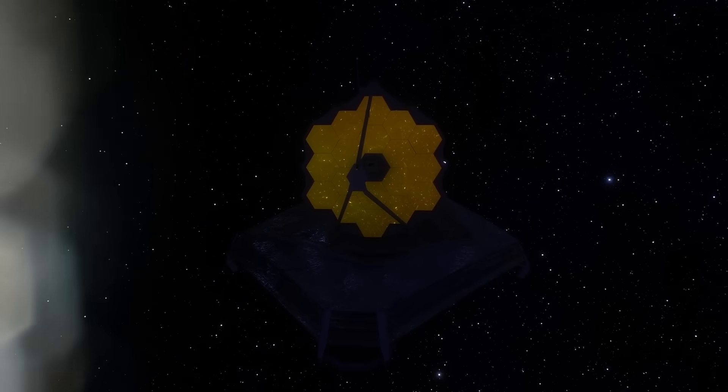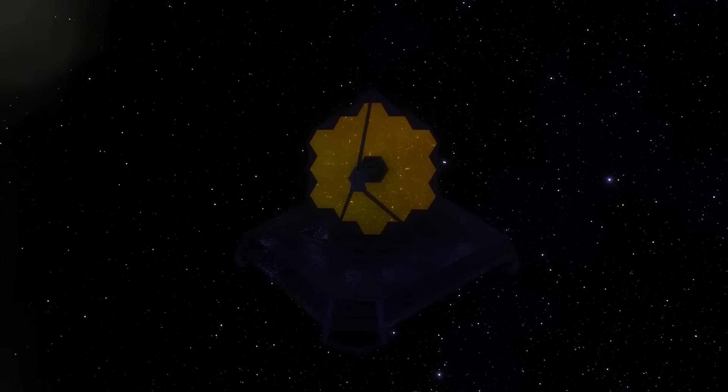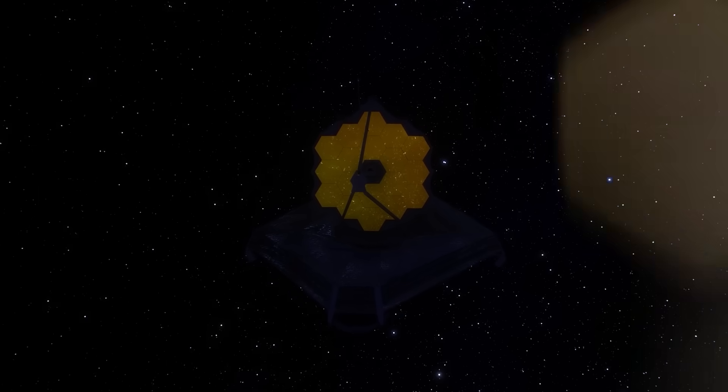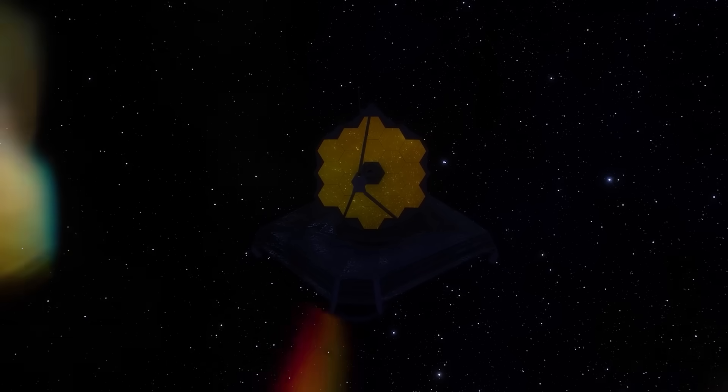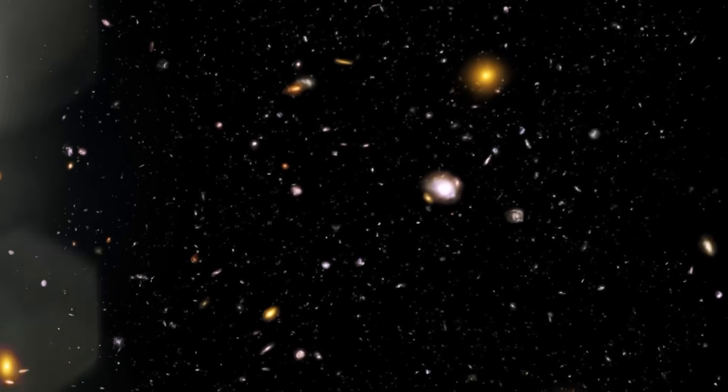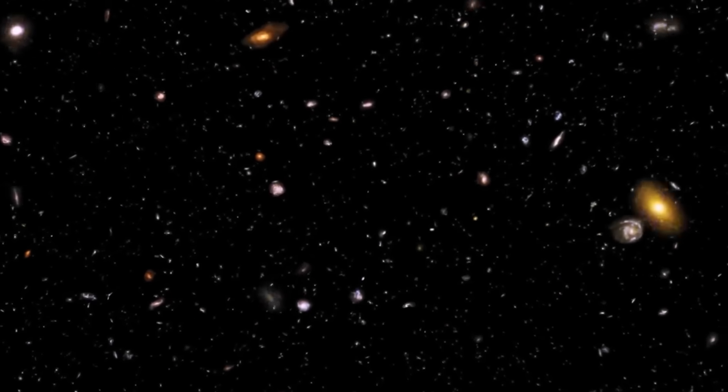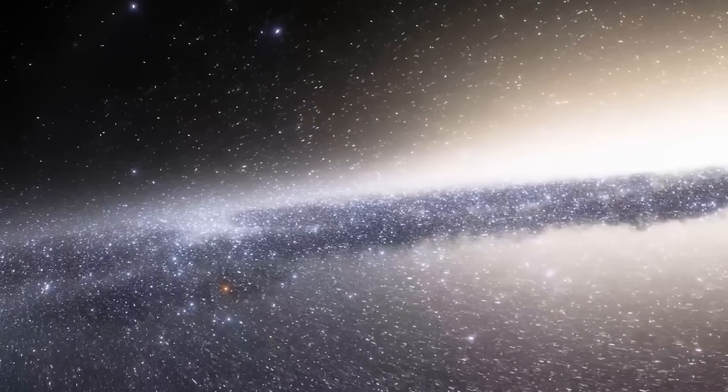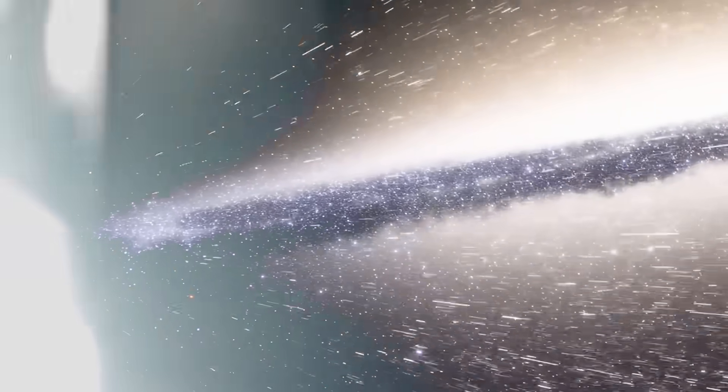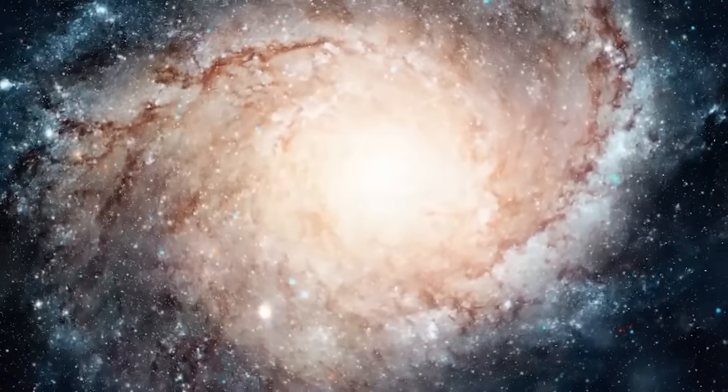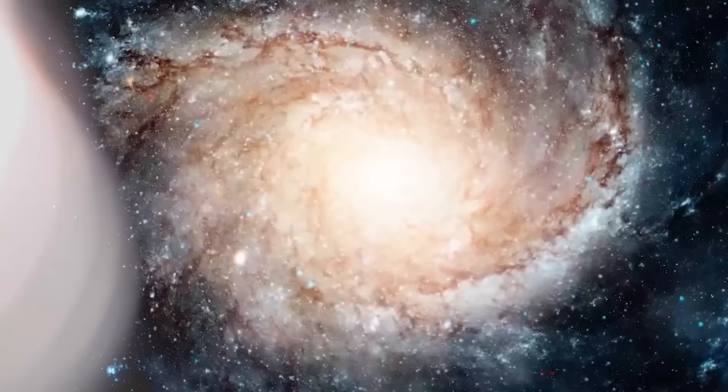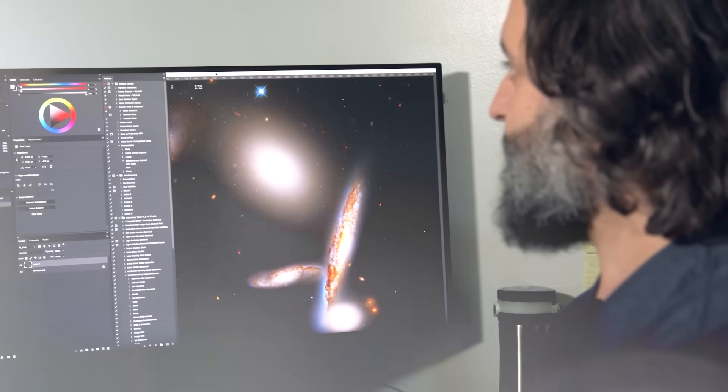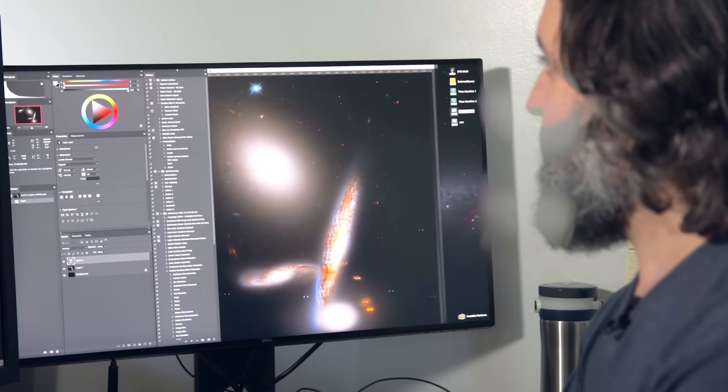To understand why this is so baffling, you have to understand how galaxies are thought to evolve. In the early universe, matter was spread thin and uneven, gradually pulled together by gravity into clouds that collapsed into stars, which then grouped into galaxies over enormous time frames. But what Webb saw suggested that this entire process had already completed far too quickly. That galaxy hadn't just taken shape, it had thrived. The laws of astrophysics didn't allow this. It was like finding a fully grown ancient redwood tree sprouting from freshly planted soil.